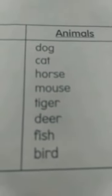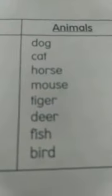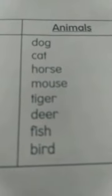Things: balloon, toys, table, chair, pen, paper, book, bag, and many more. Animals: dog, cat, horse, mouse, tiger, deer, fish, bird, and many more.